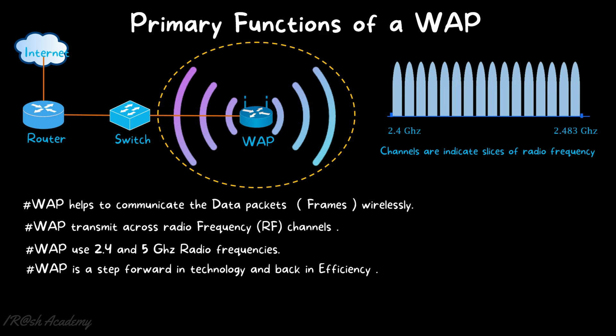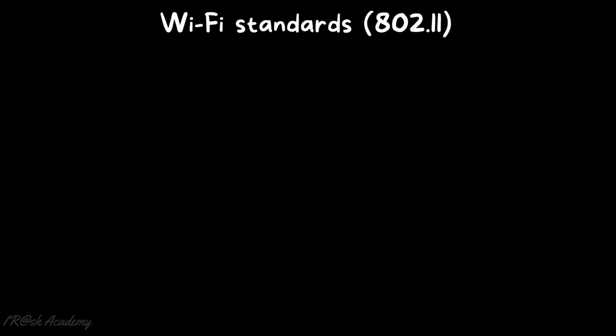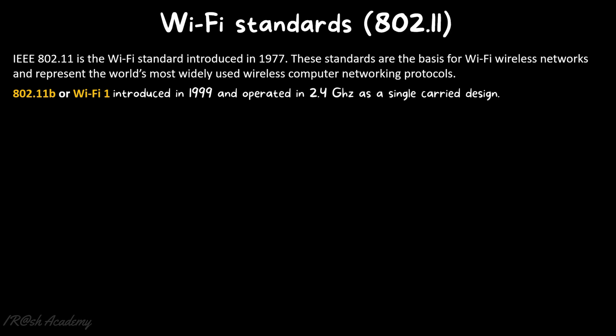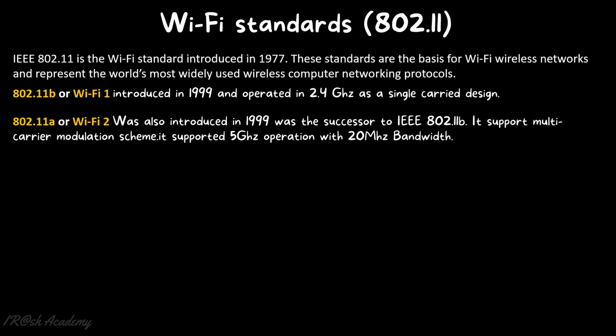Now we understand why a wireless access point is a step forward in technology but back in efficiency. Point number five: wireless access points follow the Wi-Fi standard 802.11. IEEE 802.11 is the Wi-Fi standard introduced in 1997, forming the basis for Wi-Fi wireless networks and representing the world's most widely used wireless networking protocol. The first standard, 802.11b or Wi-Fi 1, was introduced in 1999, operating in 2.4 GHz as a single carrier design. Then 802.11a or Wi-Fi 2, also introduced in 1999, was its successor and supported 5 GHz operation with 20 MHz bandwidth.